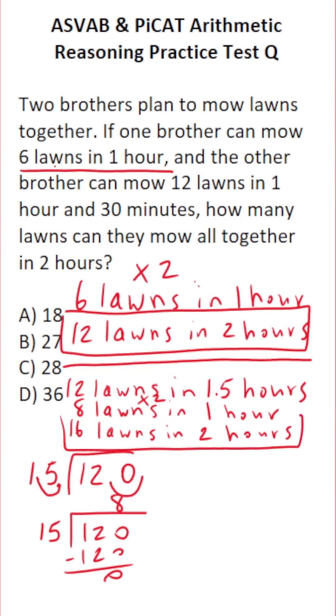So the first brother can mow 12 lawns in two hours, and this brother can mow 16 lawns in two hours. So together, they can mow 12 plus 16 lawns in two hours.